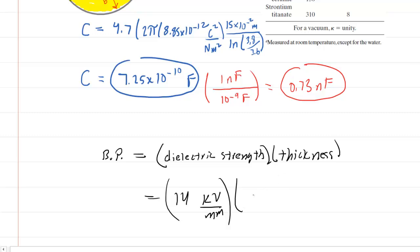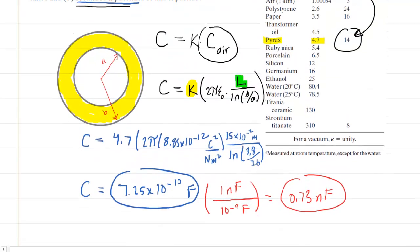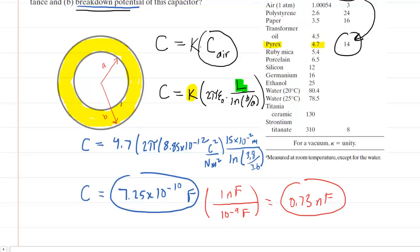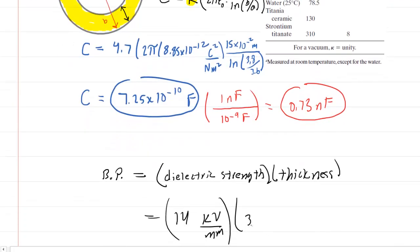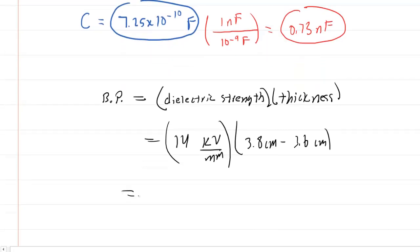We're going to multiply this by the thickness. The thickness of the glass can be easily determined because it would simply be the outer radius B minus the inner radius A. Our outer radius was 3.8 centimeters minus 3.6 centimeters. So we would have 14 kilovolts per millimeter multiplied by 0.2 centimeters.